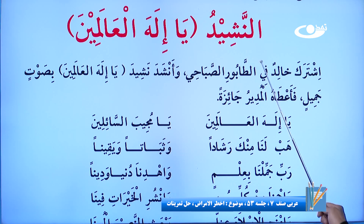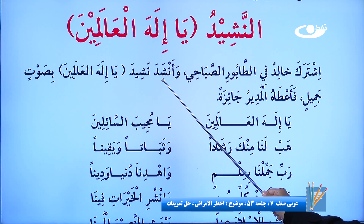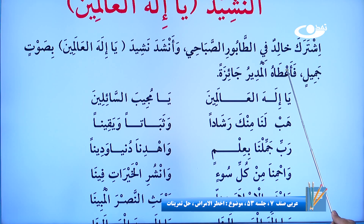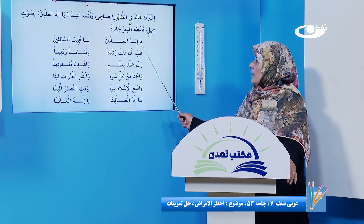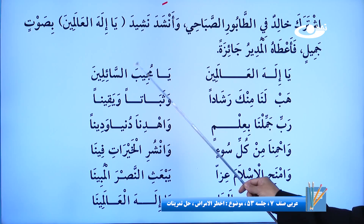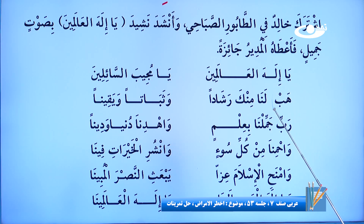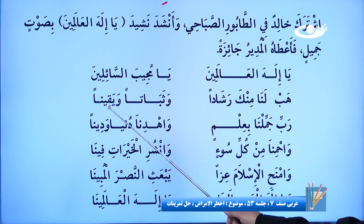اشتراک کرد خالد در برنامه صف صبحگاهی. «وأنشد في الماضی باب إفعال» و خواند سرود «یا إله العالمین» با صدای زیبا. «فأعطاه المدیر جائزة» - اعطا کرد او را مدیر یک جایزه. اعطا فعل دو مفعولی هست. سرود ما چیست؟ «یا إله العالمین» ای پروردگار جهانیان، «یا مجیب السائلین» ای جواب‌دهنده درخواست‌کنندگان. «هب» در امر هست - «هب لنا منک رشاداً و ثباتاً و یقیناً» - ببخش به ما از طرف خودت هدایت و راه‌نمایی و ثبات و یقین.